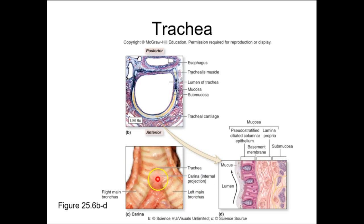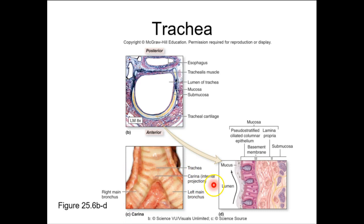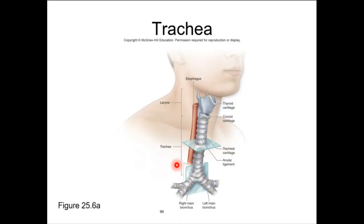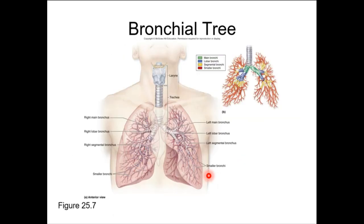At the bifurcation — where it goes from trachea to primary bronchi — there is a special cartilaginous structure known as the carina, spelled C-A-R-I-N-A. The carina is a specific location of the trachea. I can hold you to it on an image showing a whole view of the lung — you can see the carina there.